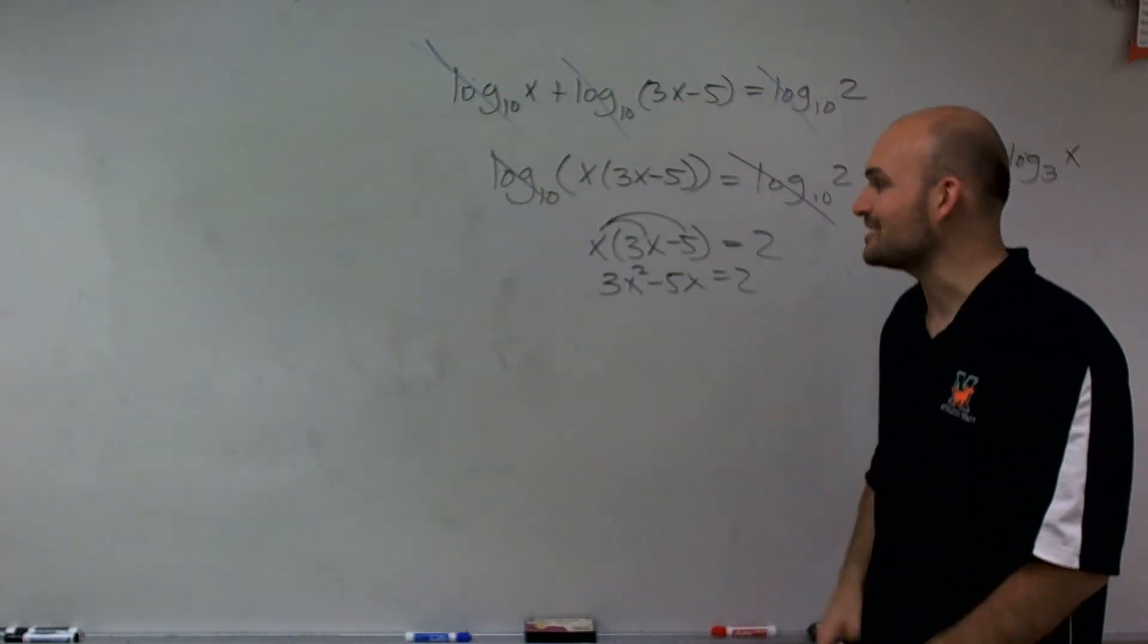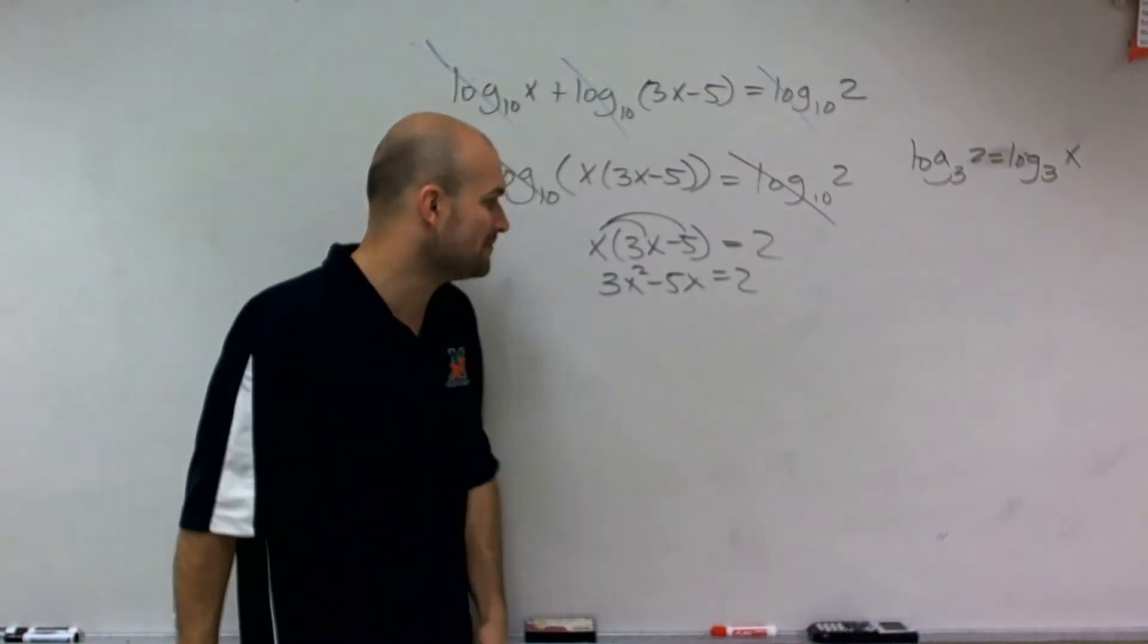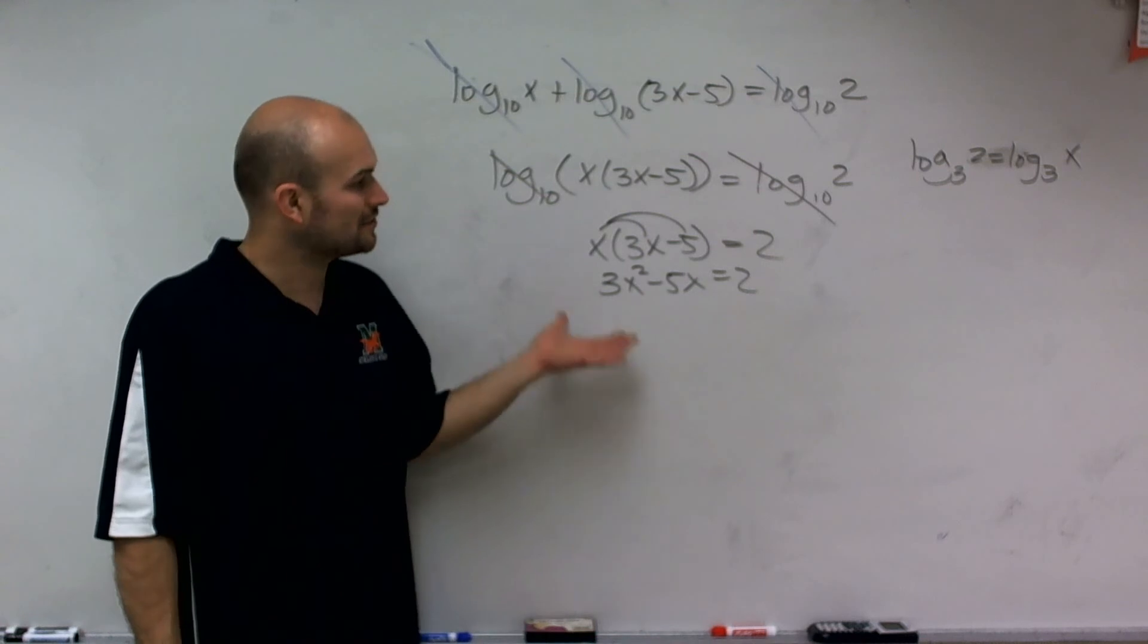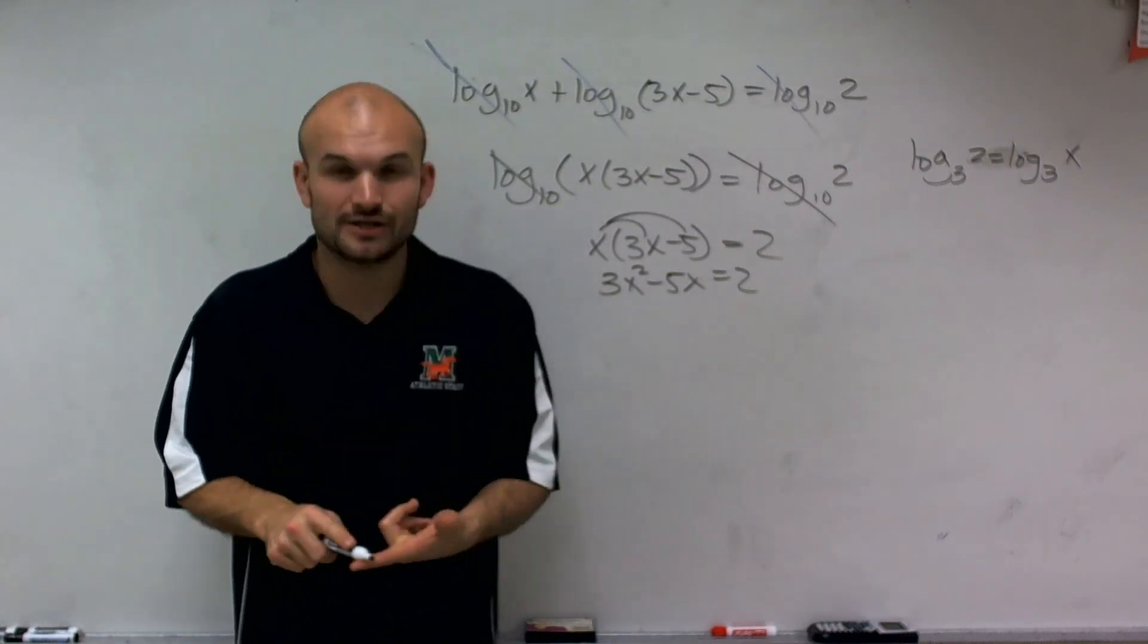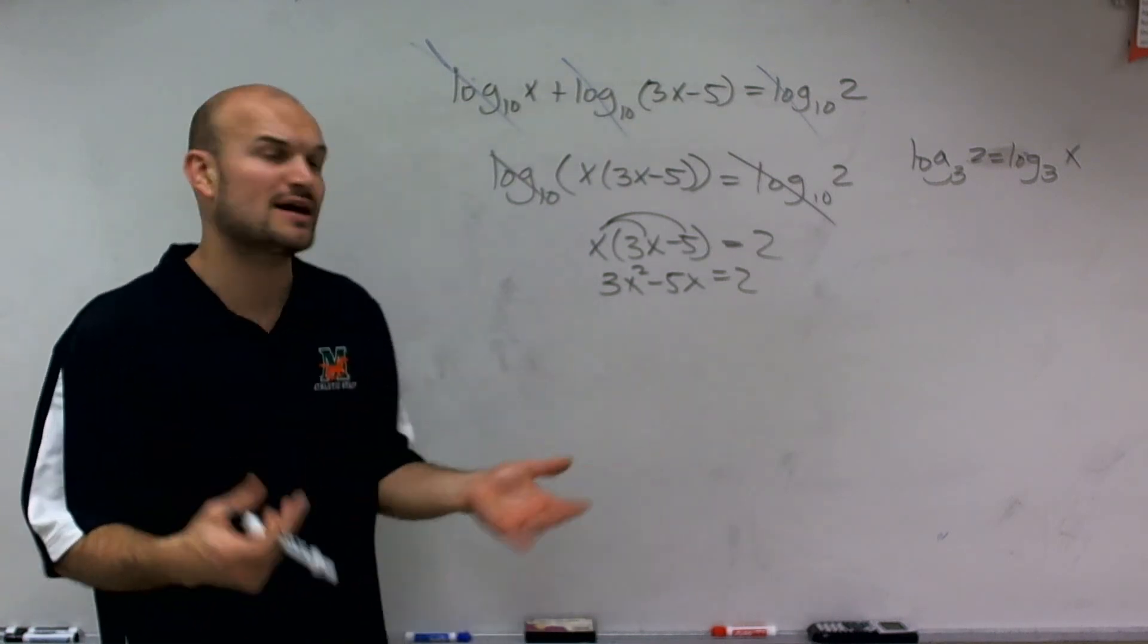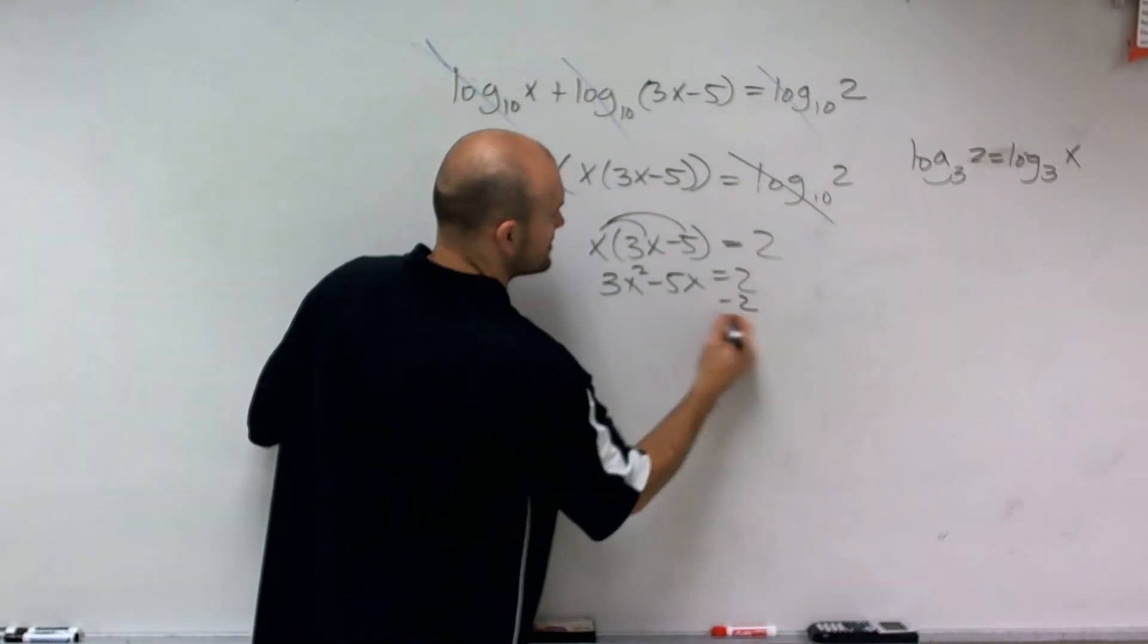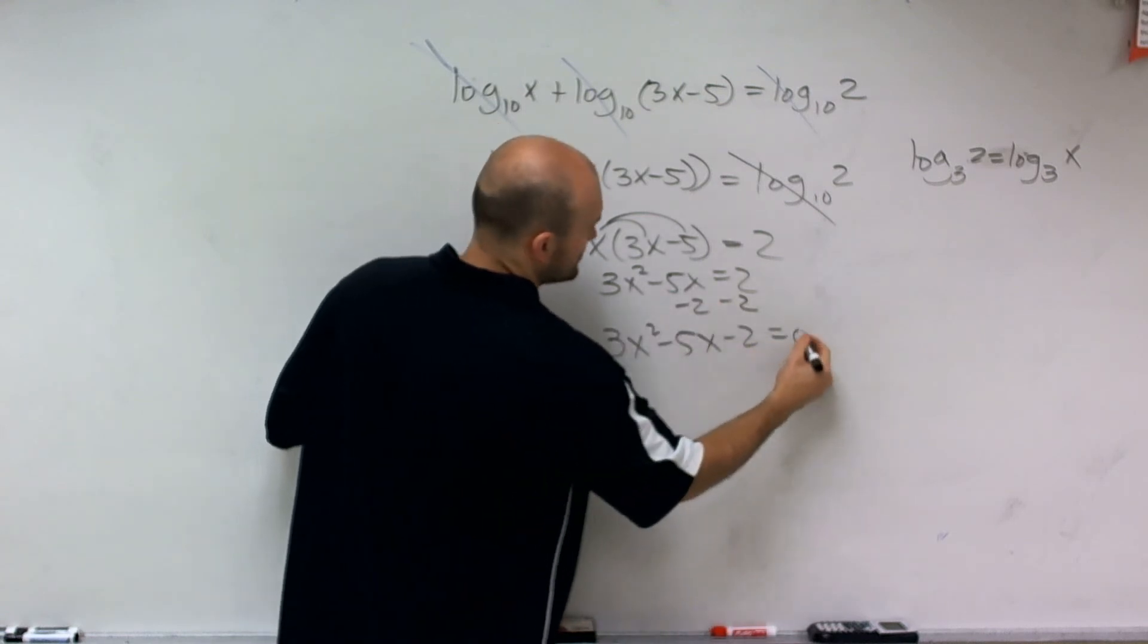So in solving quadratics, we need to remember, how do we solve? It's not like a linear equation where we just isolate the variable. Now what we have to do is look at what are our ways that we look to solve any quadratics. Well, we could use factoring. We could use the quadratic formula. We could work on completing the square or even try graphing it. Well, let's go and look at factoring this first. So if I have 3x squared minus 5x minus 2 equals 0.